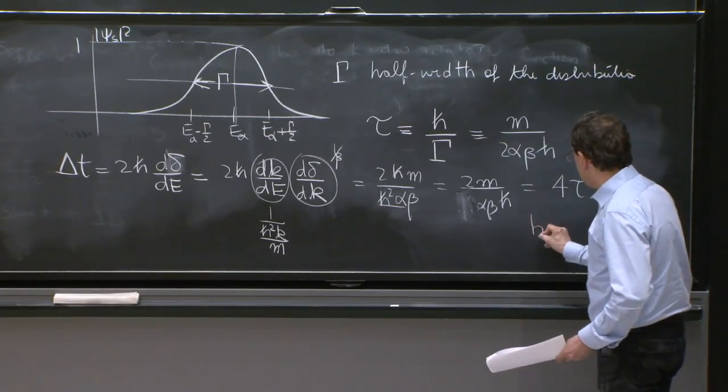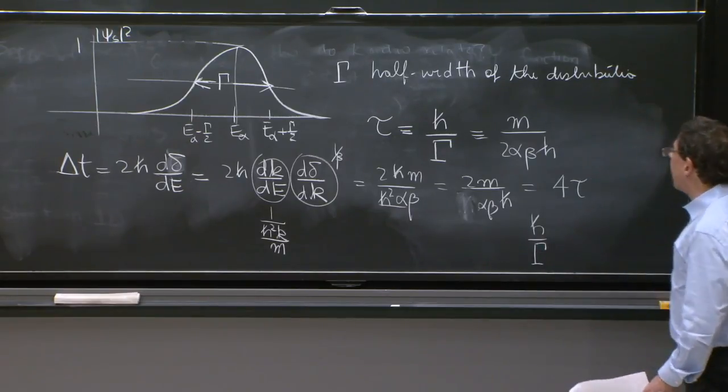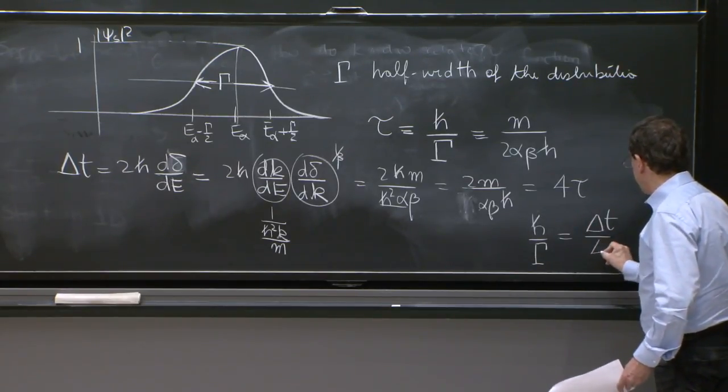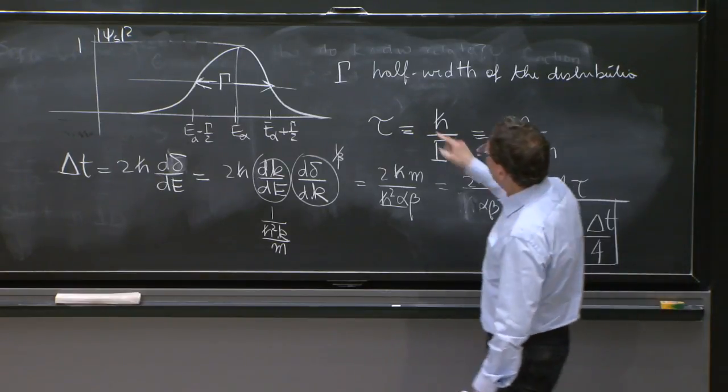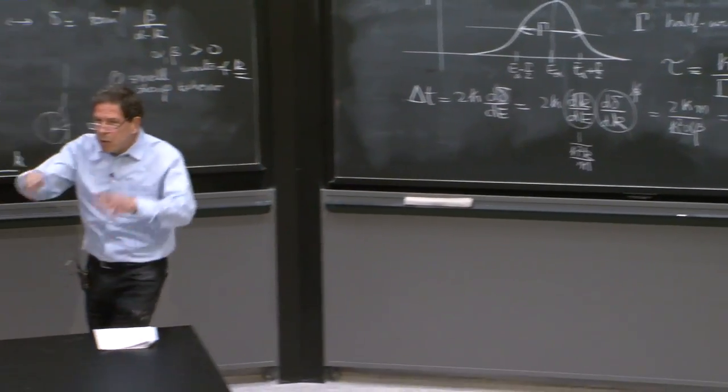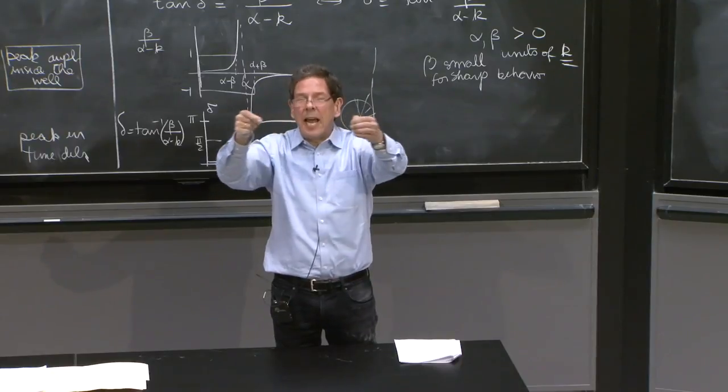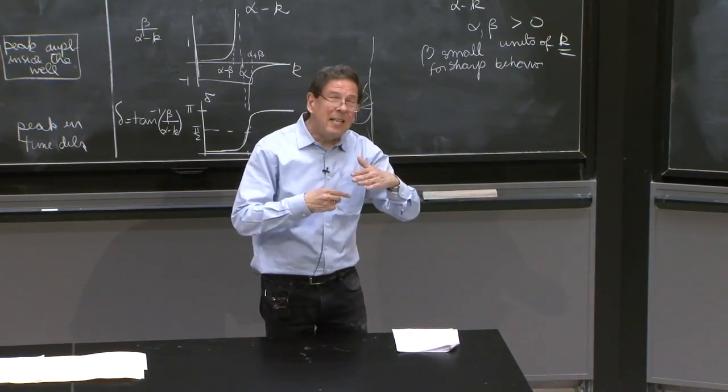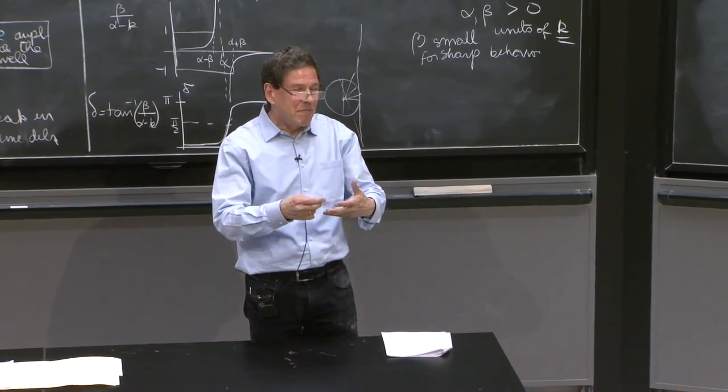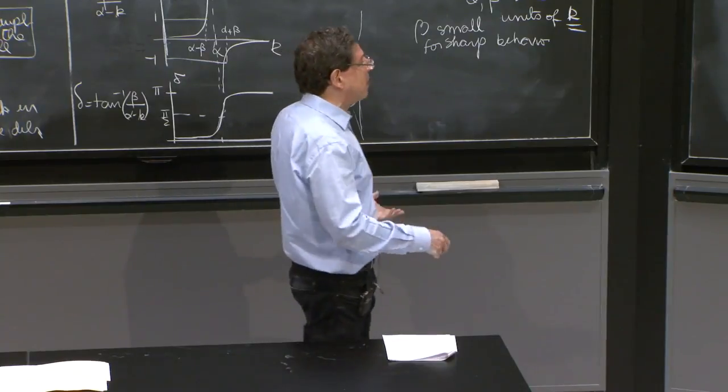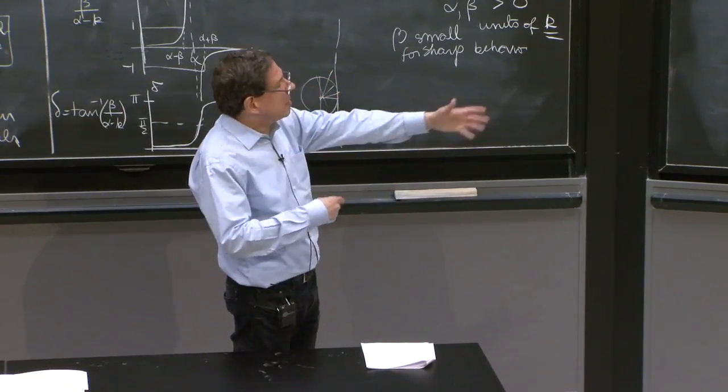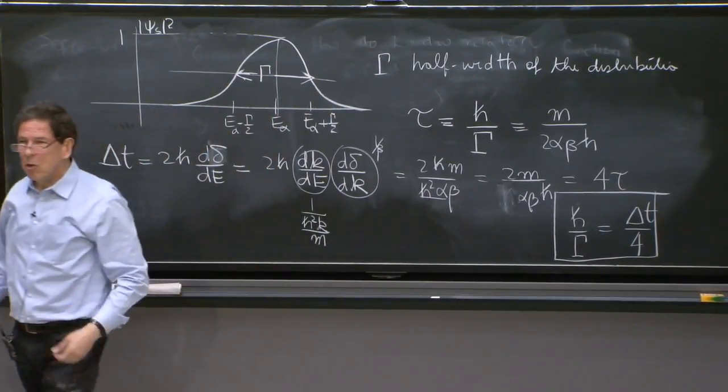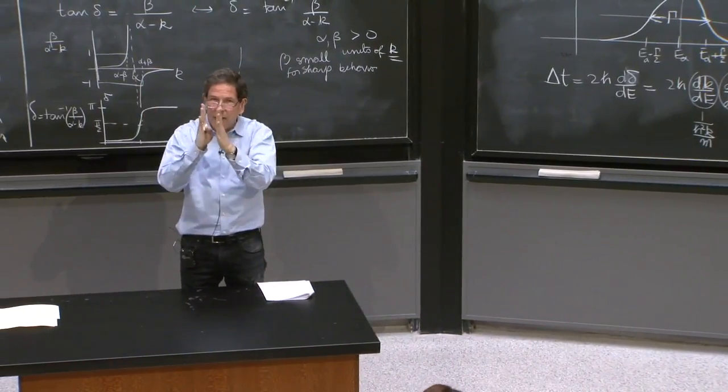So the end conclusion is that h-bar over gamma, which is a time, is tau, which is equal to delta t over 4. So that's the intuition for the half width. So in the distribution of the scattering angle, there's a half width. It's an energy distribution. And there's a time associated with it, which is h-bar over the half width. And being a time, it must be related to some physical time that has appeared. It's nothing else than the delay. So if the delay is large, gamma is small, and the width is small. It's a narrow resonance. So a narrow resonance is one in which the width is very small.